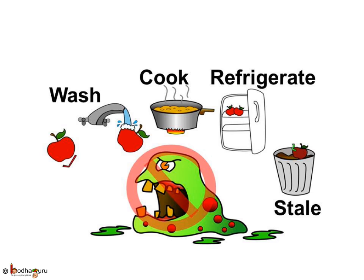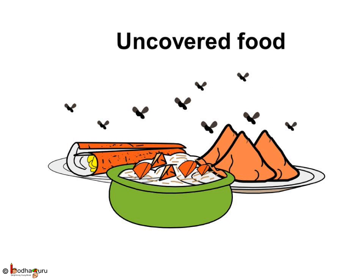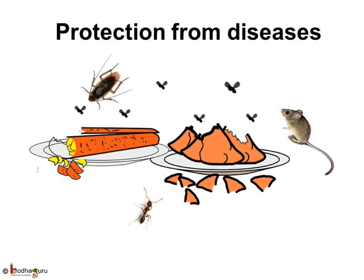Stale food should be thrown away and not consumed. Why do we keep our food items covered? Why should we not eat street food from vendors who keep their food items uncovered? Because pests like mice, cockroaches, and house flies visit dirty and filthy places, and microbes stick to their legs and other parts. These pests sit on open food items and spread germs. So food should be kept covered to prevent the spreading of diseases.